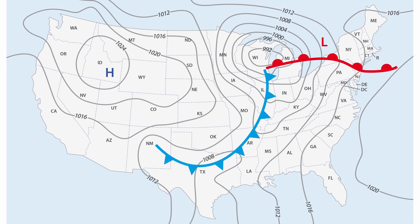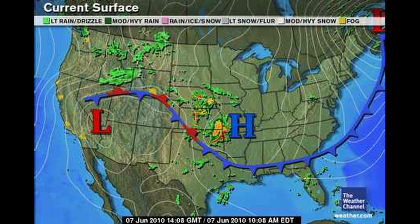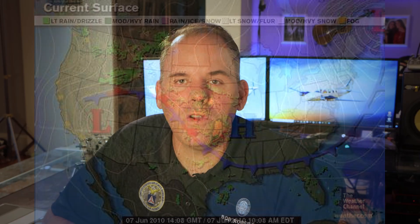Now that we understand the types of fronts, let's see how we show them on a map. Cold fronts have blue triangles — or think of them as icicles. Warm fronts have red half circles — think of them as half suns since they're hotter. The stationary front alternates between those two symbols, showing the fronts pushing against each other without really moving in one direction or the other. The occluded front is shown as two triangles and one circle — two icicles and one sun.